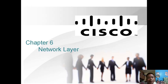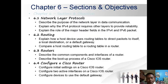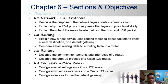Hey guys, welcome again to my blog. This is Chapter 6, Network Layer. Section 6.1 is Network Layer Protocols: describe the purpose of the network layer in data communication, explain why the IPv4 protocol requires other layers to provide reliability.